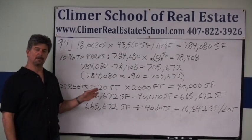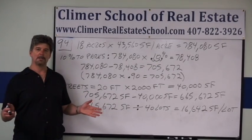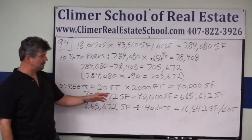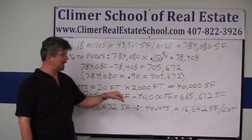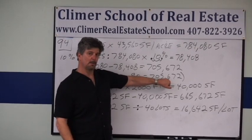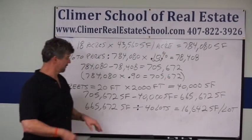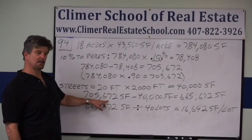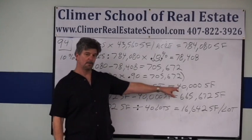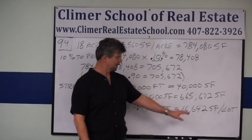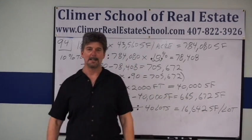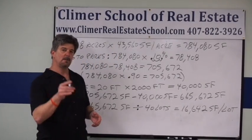Second, we've got to take out the amount for the streets. How do we know how much goes for the streets? Because the problem tells you, and even on the state exam it will tell you, the streets are 20 feet by 2,000 feet. If you multiply those together, that gives you 40,000 square feet. Go back to the number we're starting with after we took out the 10% for parks. 705,672 square feet, minus the 40,000 square feet for the streets, leaves you with 665,672 square feet. That's how much the developer can use for the lots.